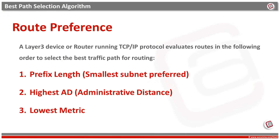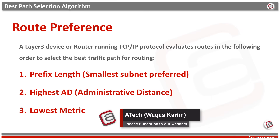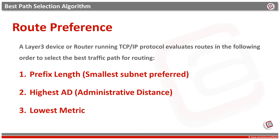A Layer 3 device or a router running TCP/IP protocol evaluates routes in the following order: prefix length, admin distance, and lowest metric. First of all, it prefers the smallest subnet or longest prefix length. If all the lengths are equal, then it chooses the highest administrative distance route. And if the admin distance is also equal, then it chooses the route with the lowest metric. Let's discuss each preference one by one with an example.